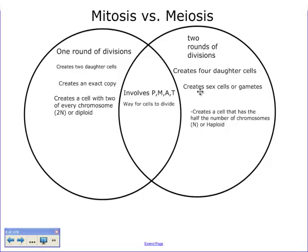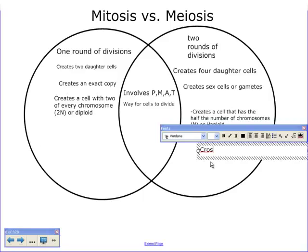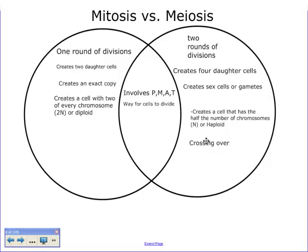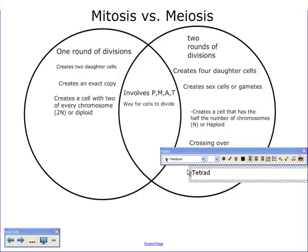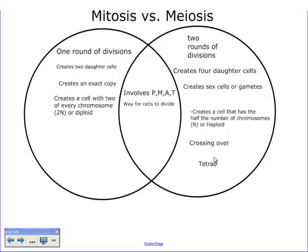Going back to the four daughter cells from meiosis — not only do they have half the number of chromosomes, but each cell is going to have a different kind of chromosome because of crossing over. That's another difference we can add. Crossing over occurs — as seen in the video we watched yesterday — where chromosomes line up next to each other in a tetrad. That tetrad in metaphase one is another difference from mitosis.